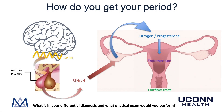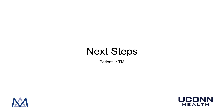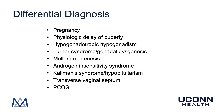With primary and secondary amenorrhea defined and a brief overview of where the menstrual period comes from, let's review our differential diagnosis and physical exam. The differential diagnosis of primary amenorrhea as seen in our patient TM would include: pregnancy, physiologic delay of puberty, hypogonadotropic hypogonadism, Turner syndrome or gonadal dysgenesis, Mullerian agenesis, androgen insensitivity syndrome, Kallmann syndrome or hypopituitarism, transverse vaginal septum, and polycystic ovarian syndrome.